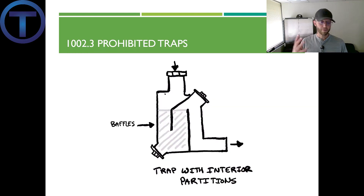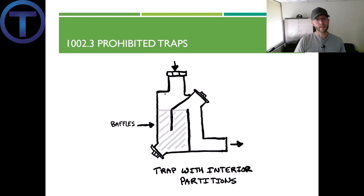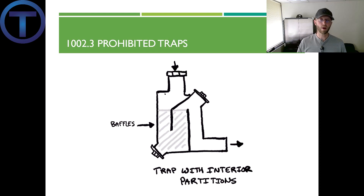Prohibited trap number four: traps not integral with the fixture that depend on interior partitions for the seal, except for those traps constructed of an approved material that is resistant to corrosion and degradation. Looking at the example here, there are partition walls inside this trap contraption. You and I can see right away this is going to be problematic — the design includes multiple cleanouts, but let's just not go there.